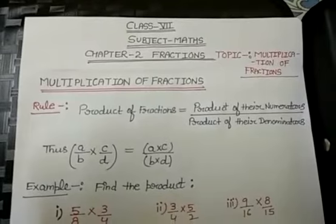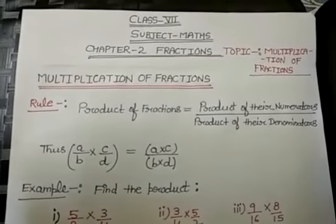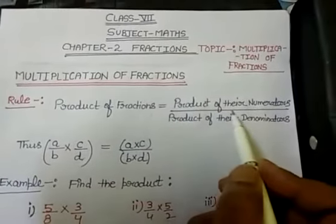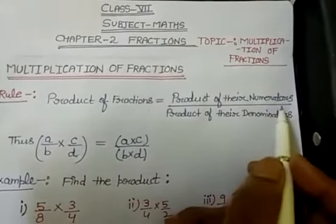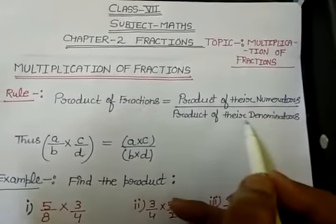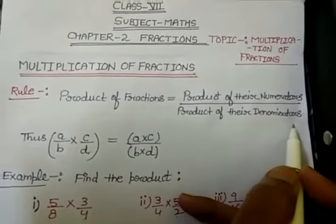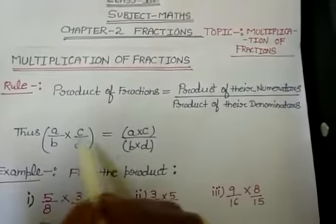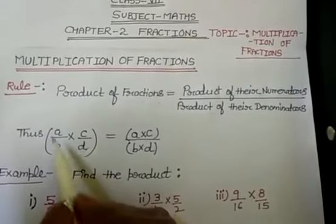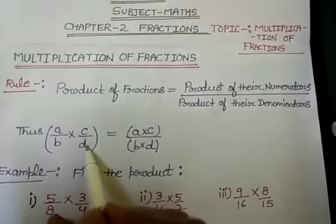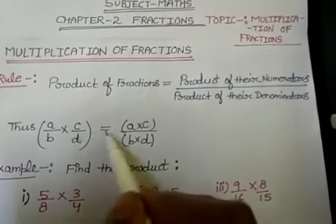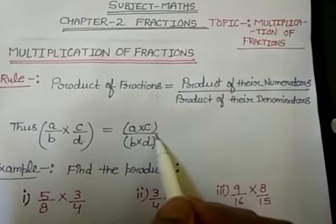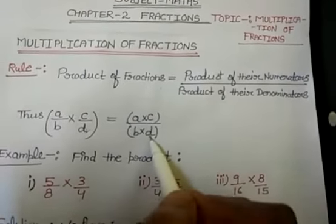For the multiplication of fractions, there is a rule: the product of fractions is equal to the product of their numerators upon the product of their denominators. Thus, if we have two fractions A upon B and C upon D, then the product of A/B and C/D equals A into C upon B into D.